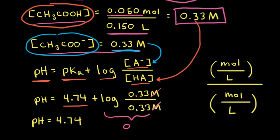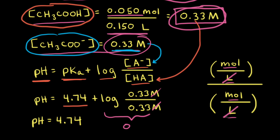Notice that even though I calculated the concentration of the weak acid and the conjugate base, I didn't really have to. In the Henderson-Hasselbalch equation, we have concentration divided by concentration — molarity is moles per liter — so it's moles over liters divided by moles over liters. Since both the weak acid and the conjugate base share the same total volume, the liters cancel. We could just use the ratio of moles and get the same answer: a final pH of 4.74.